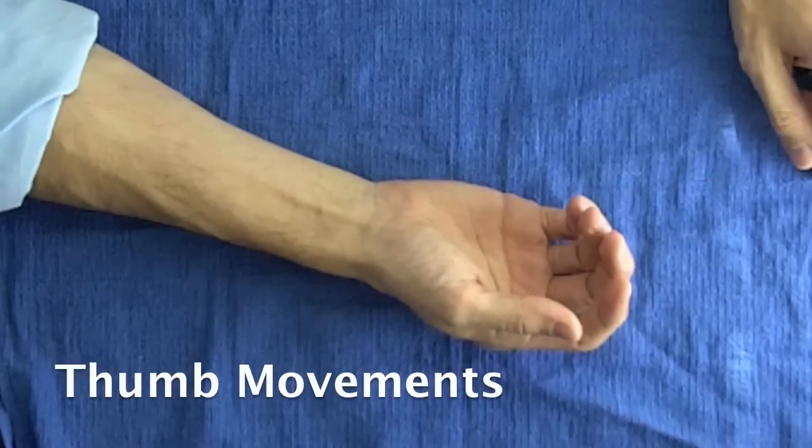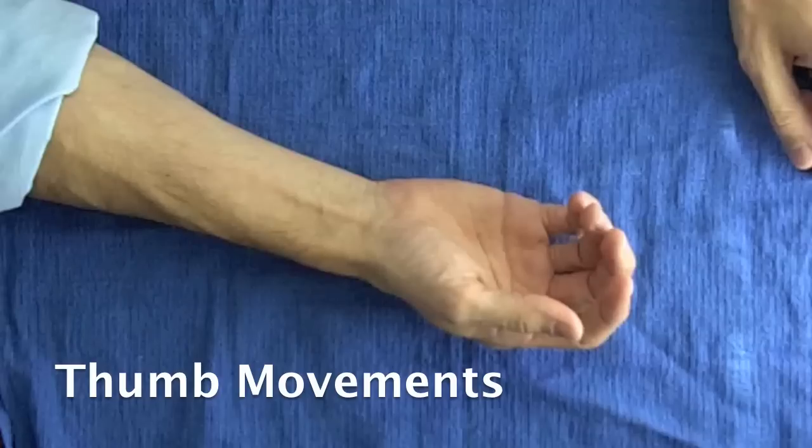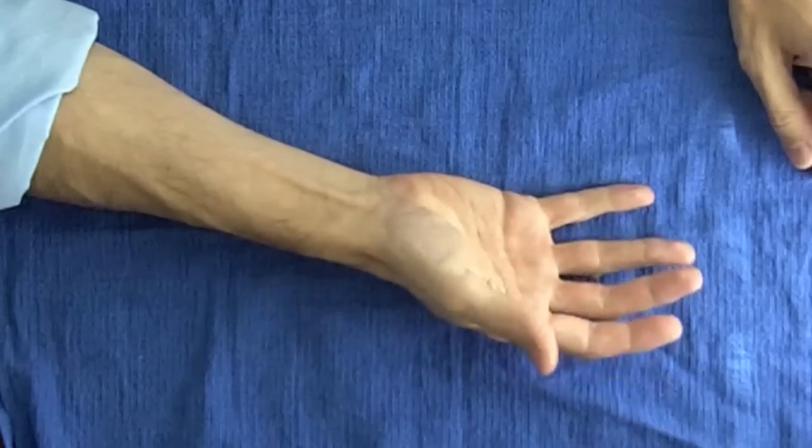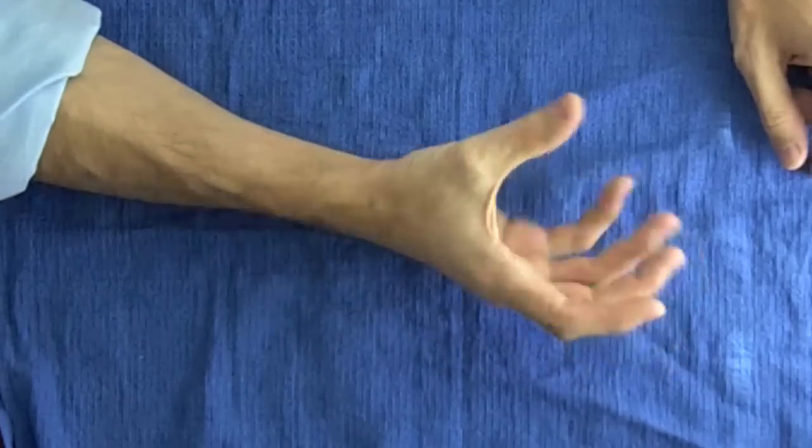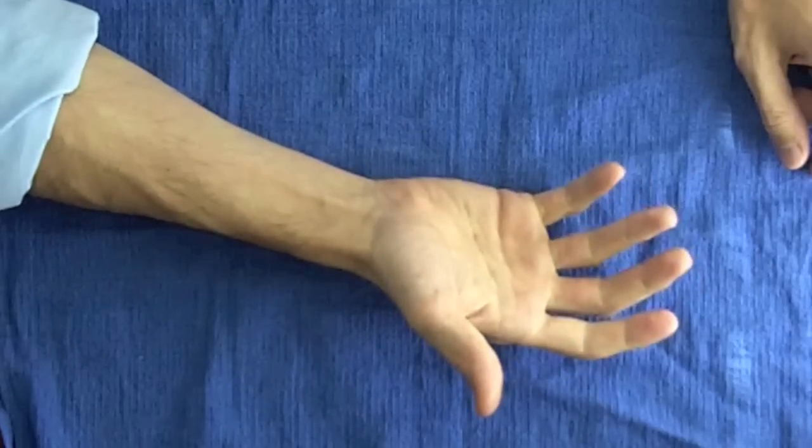Thumb movements: the thumb is responsible for half the function of our hands. It moves in unique ways compared with the fingers.